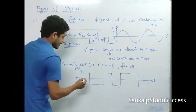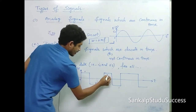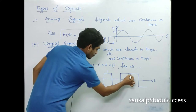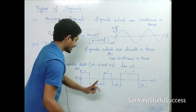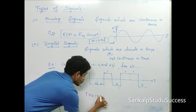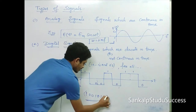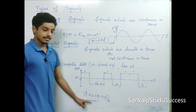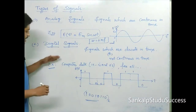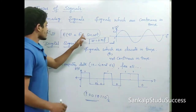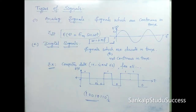In digital signals, values are represented as ones and zeros: this is one, this is zero, this is zero, this is one, this is zero, this is one, this is one, zero — a binary sequence. Digital signals are in binary format, whereas analog signals are in trigonometric sinusoidal format.